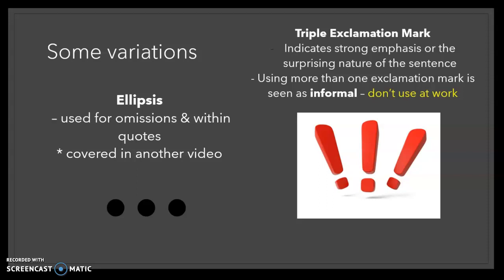Some variations of those three punctuation marks is the ellipsis, which is three dots, and that is used for a totally different purpose. It's used in omissions and in quotes. We'll cover that in another video, but it's not related to full stops at all. The triple exclamation mark indicates the strong emphasis or surprising nature of the sentence. It's very informal and really you shouldn't use it at work, but it's sometimes seen these days in text messages and informal writing.